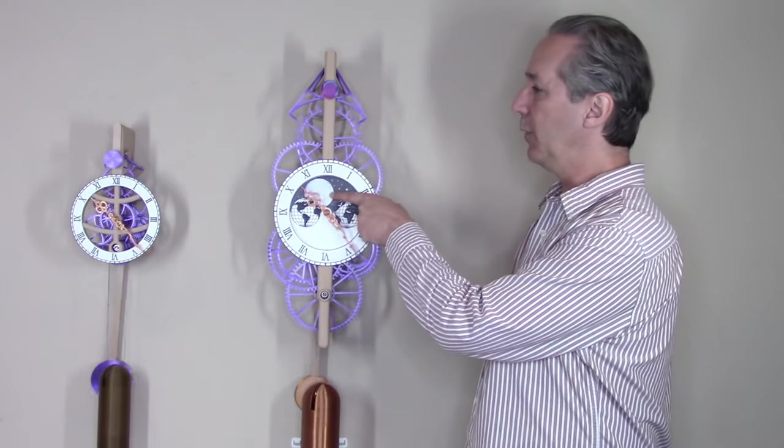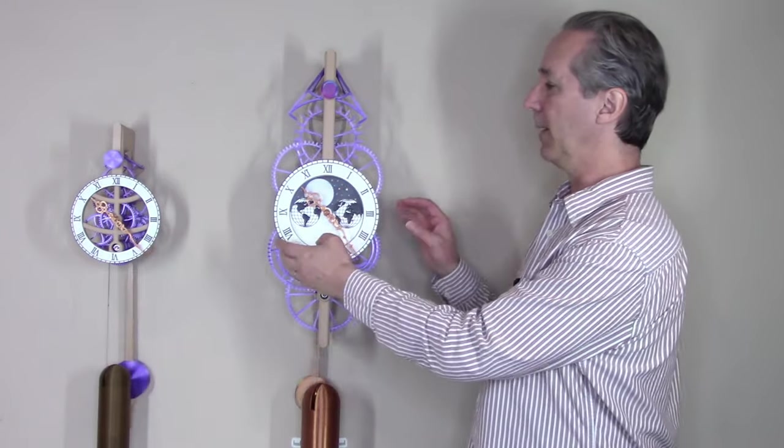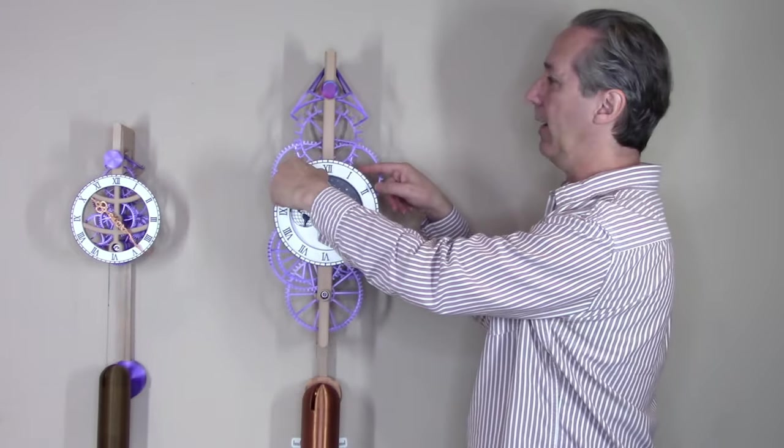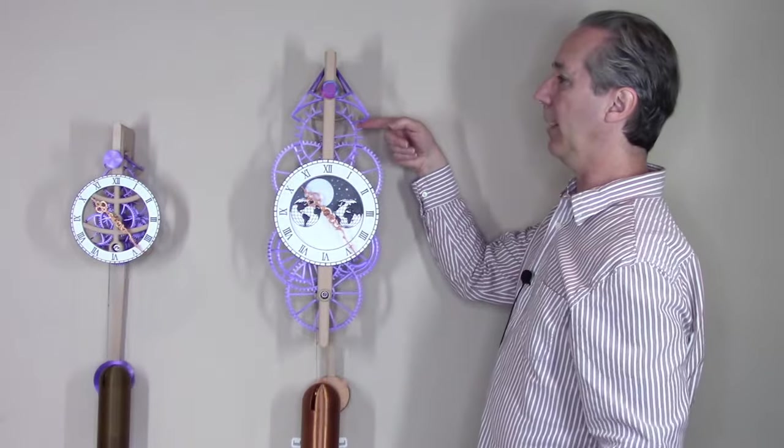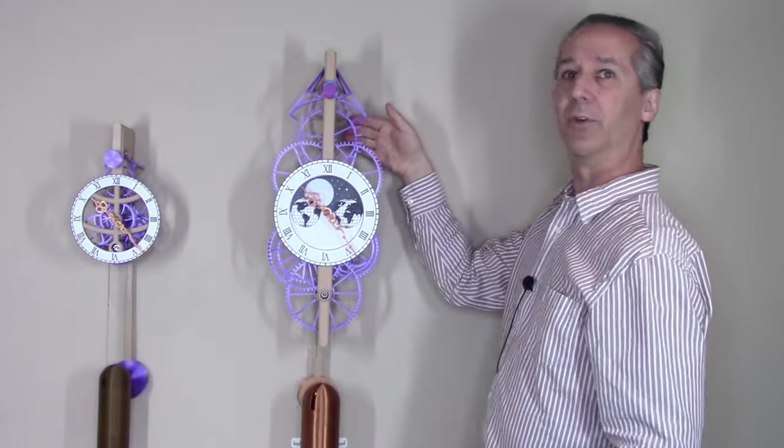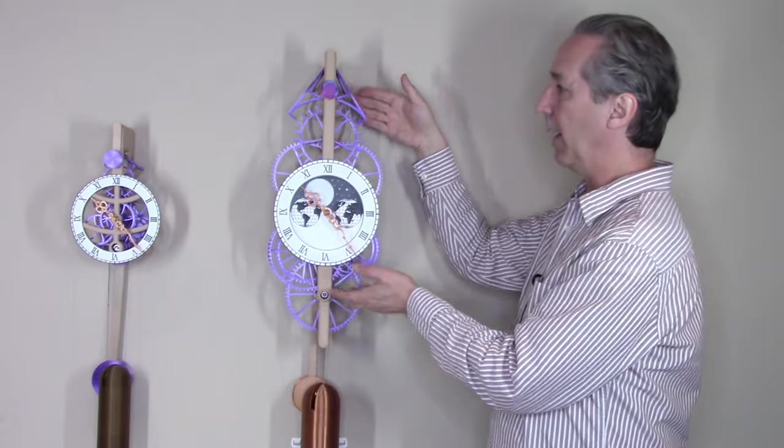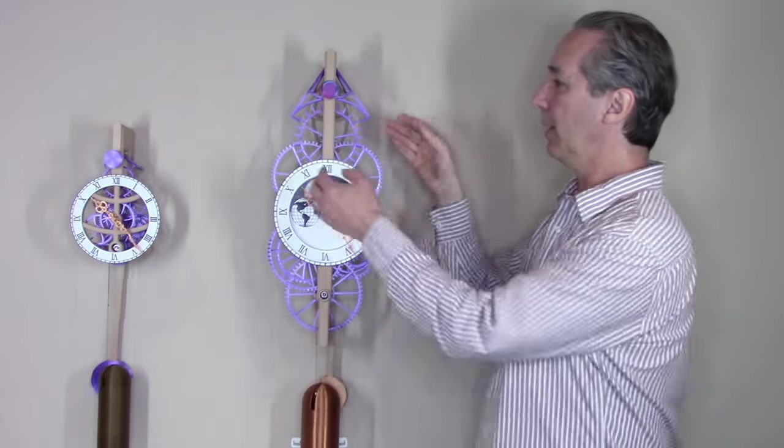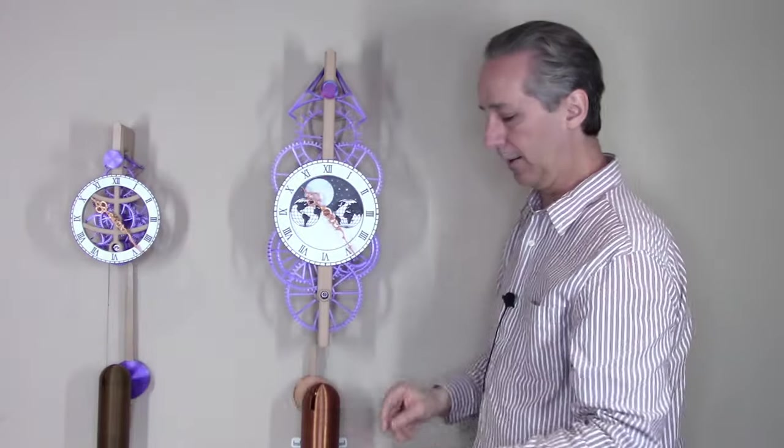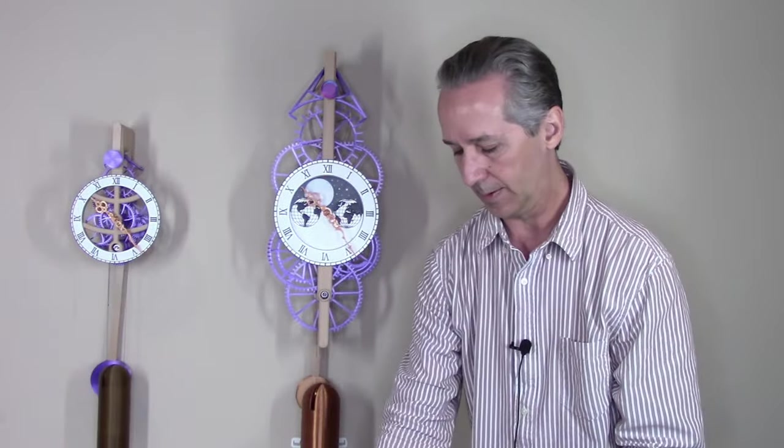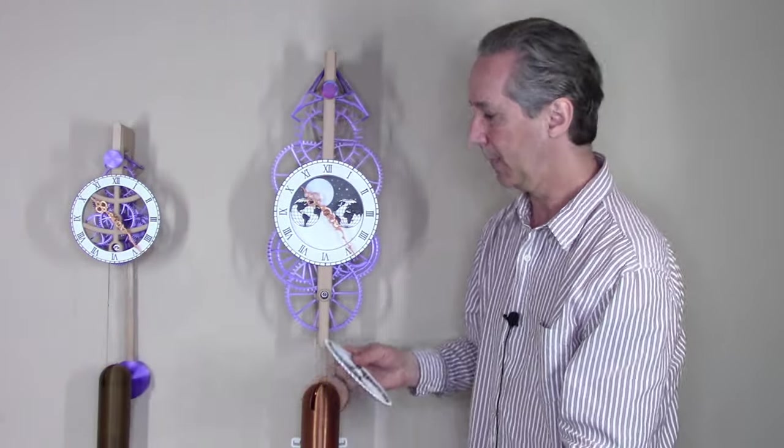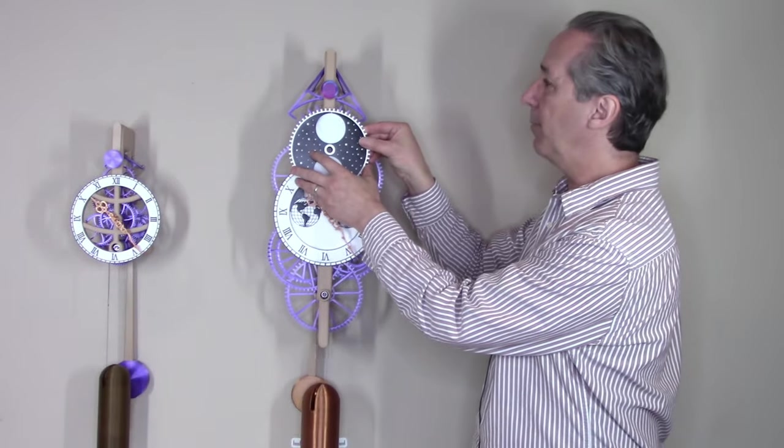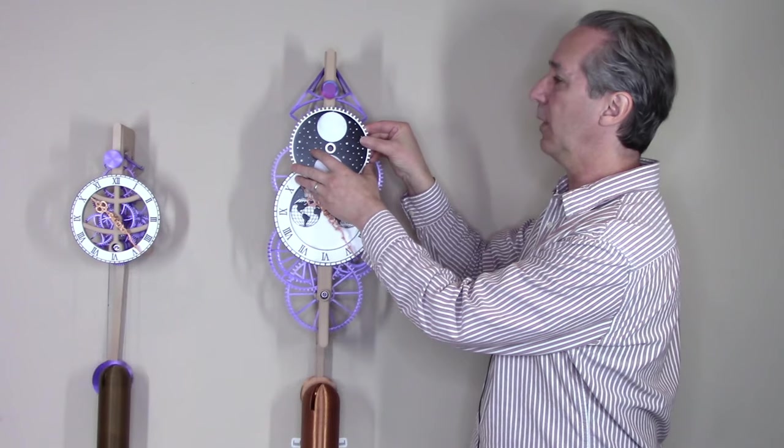A moon phase dial is fairly common in a grandfather clock, but it's often placed above the main dial. On this clock and on almost all of my wall-mounted clocks, I like to keep the escapement very prominently displayed. So it didn't make sense to put the moon dial up top because that would block most of the view of the escapement.